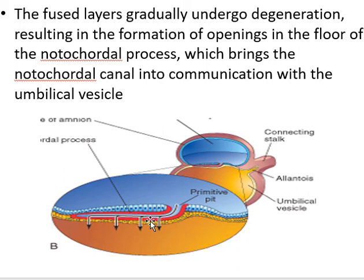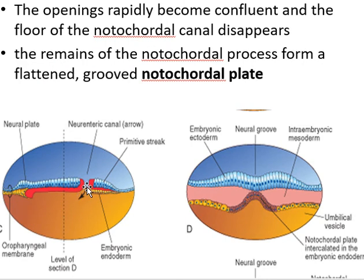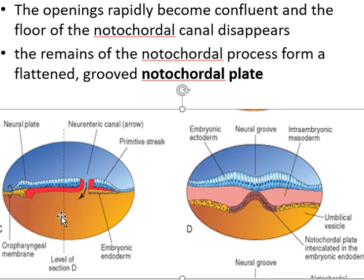This floor will be fused with the underlying endoderm and there will be perforation within it. Due to this degeneration process, these two fused layers will become porous in nature. Then these fused layers will disappear, and the primitive pit gets communication with the yolk sac. So this hole is now called the neuroenteric canal, which will communicate the amniotic cavity with the yolk sac cavity.